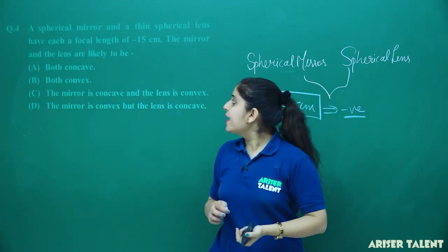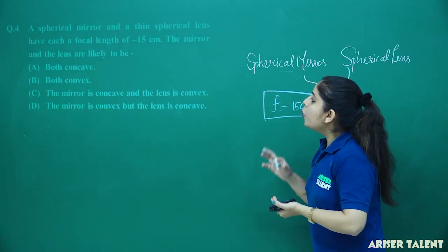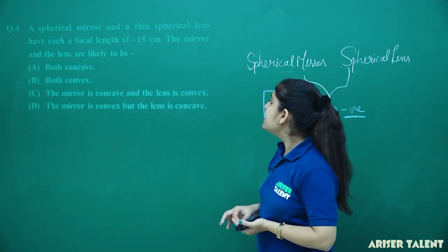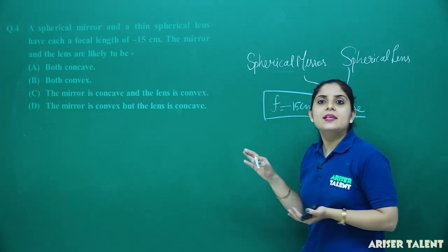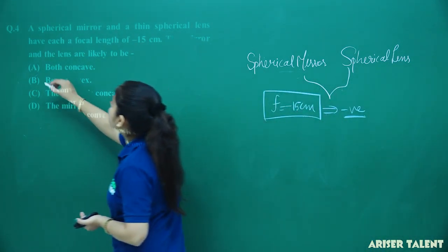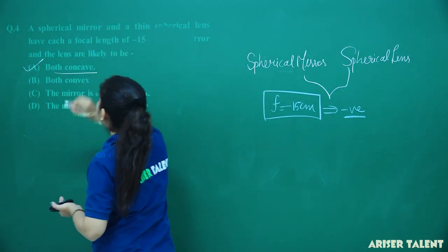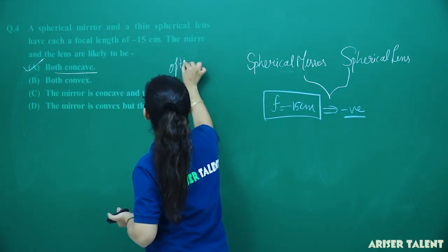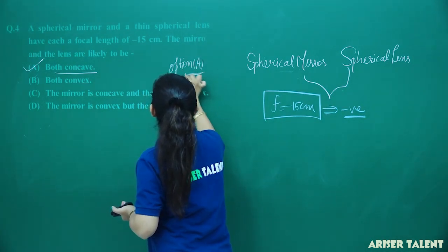Let's check the options: both concave, both convex, the mirror is concave and the lens is convex, or the mirror is convex but the lens is concave. Both are concave because we are getting a negative focal length. So option number A will be correct here.